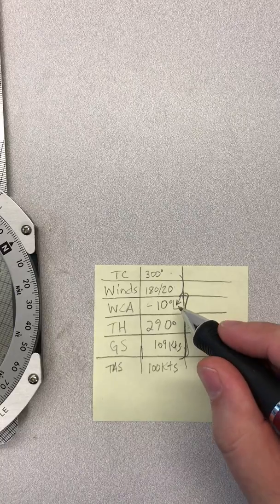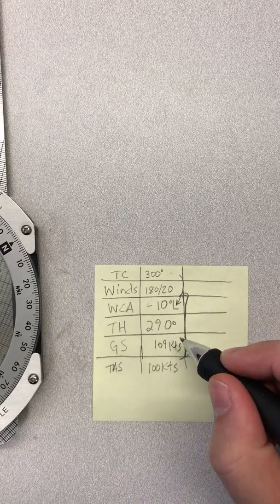We're going to practice this a lot in class, and that's how you use your wind side to determine wind correction, true heading, and ground speed on the E6B.